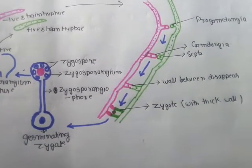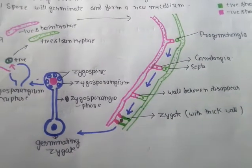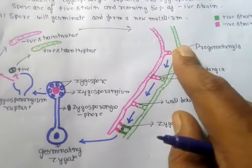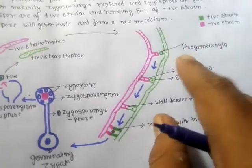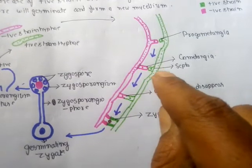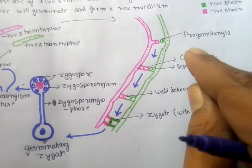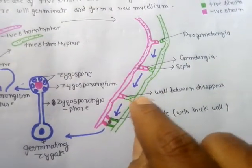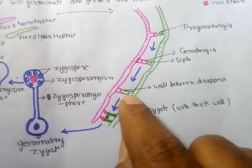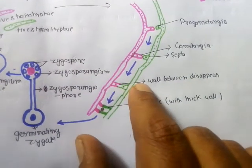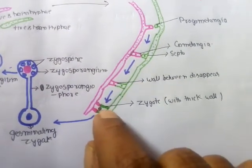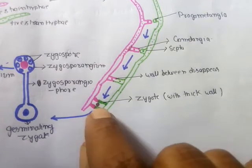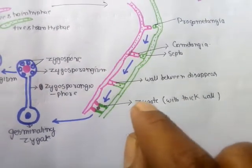This is how Rhizopus completes its sexual reproduction. To summarize: the first step is formation of lateral outgrowths called progametangia; a septum then converts progametangia into gametangia with single nuclei. Both gametangia show conjugation, after which their nuclei fuse and the wall thickens, forming the zygote.